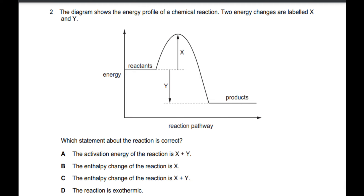The reactants are higher in energy than the product, so this reaction is exothermic — the reactant has lost energy while converting into product. Option A says activation energy is X plus Y — X is the activation energy alone, so A is incorrect. Option B says enthalpy change is X — X is the activation energy, so B is wrong. Option C says enthalpy change is X plus Y — enthalpy change is Y, not X plus Y, so C is wrong. Option D says the reaction is exothermic — that is correct because reactants are higher in energy than the product. So the correct answer is D.